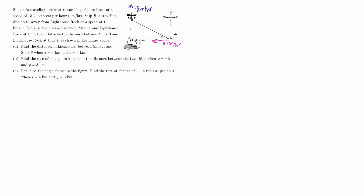The first thing we want to find is the distance in kilometers between ship A and ship B. We'll represent that with variable Z. We have a right triangle with sides X, Y, and Z, and we want to find the distance when X is 4 and Y is 3. Using the Pythagorean theorem, that's the square root of 9 plus 16, which is the square root of 25, or 5. So the answer to part A is 5 kilometers.